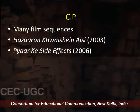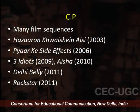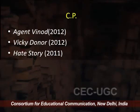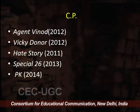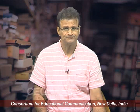Connaught Place is also a location where a lot of film shooting takes place. Films shot here include Haazaron Khwaishein Aisi, PK, Side Effects, 3 Idiots, Aisha, Delhi Belly, Rockstar, Agent Vinod (2012), Vicky Donor (2012), Dil Dhadakne Do (2011), Special 26 (2013), and PK (2014). Filmmakers have been enamored by the architecture available at Connaught Place, and numerous other films have also been shot there.